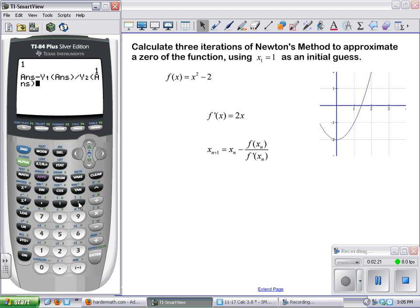So my x sub 1, my initial input, was a 1. When I hit enter here it gives me my adjusted x sub 2, so it's telling me that 1.5 is a closer estimation. And now I can just hit the enter button to do another iteration.